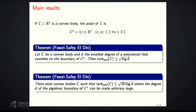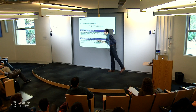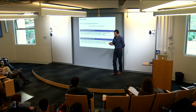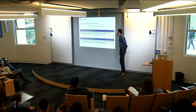For polytopes, D here is really the number of vertices. Note that the PSD rank of a convex body and of its polar are equal. So you could equivalently state this as the degree of the polynomial vanishing on the boundary of C itself. But the polar is a crucial tool in the proof, so it would be hiding something to state it differently.